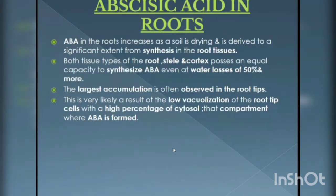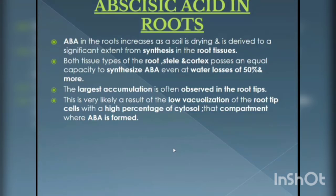Abscisic Acid in Roots. Abscisic Acid in the root increases as the soil is dry and is derived to a significant extent from synthesis in the root tissues. Both tissue types of root — stele and cortex — possess an equal capacity to synthesize ABA, even at water losses of 50% and more. The largest accumulation is often observed in the root tips. This is very likely a result of the low vacuolization of the root tip cells with a high percentage of cytosol, the compartment where ABA is formed.